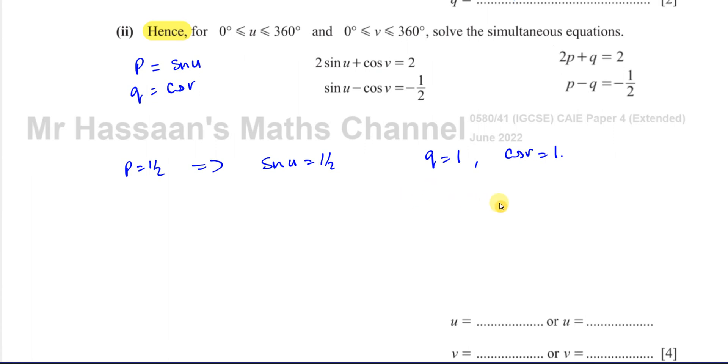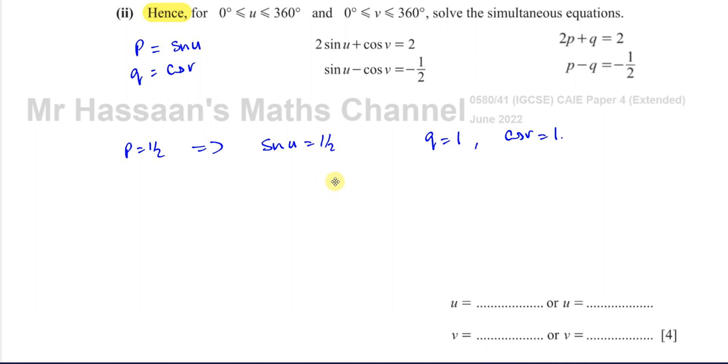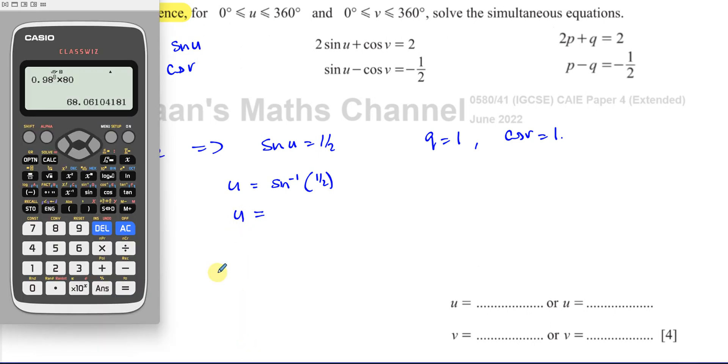Now we have to solve these equations and find all solutions between 0 and 360. To solve this equation, first you use your calculator to find the principal solution. So u equals inverse sine of a half. We want the angle for which the sine ratio is a half. Make sure the calculator is in degree mode. Inverse sine of a half gives us 30 degrees.